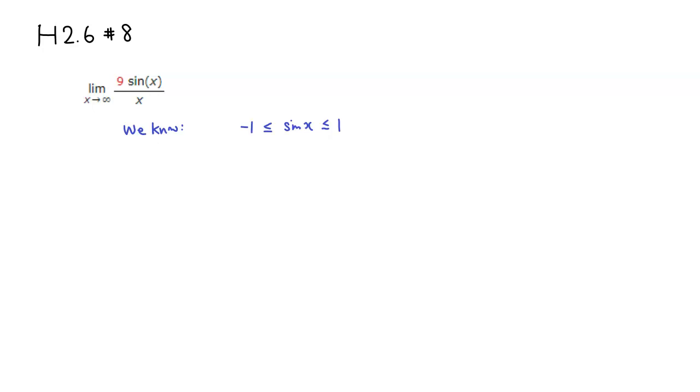Then all you have to do is we have to change it to somehow relate it to 9 sine of x over x. So the first thing I would do is multiply by 9. So you have negative 9 is less than or equal to 9 sine of x is less than or equal to 9, right?